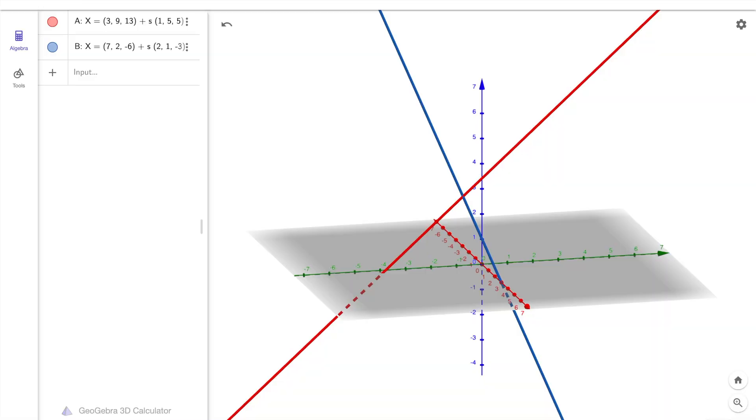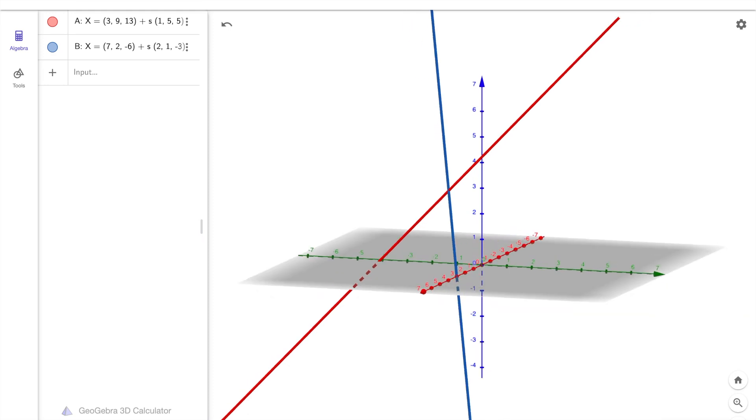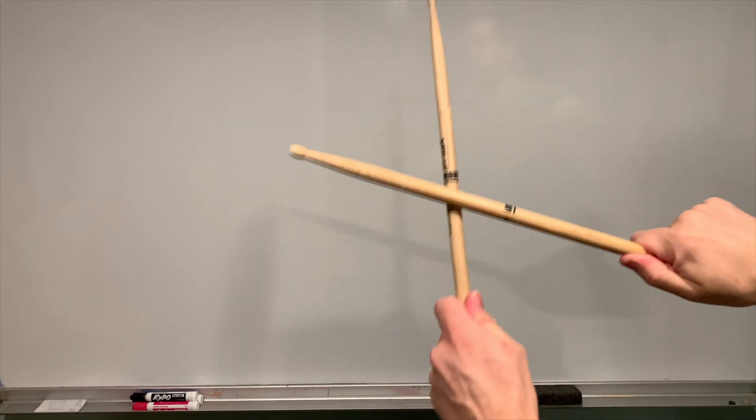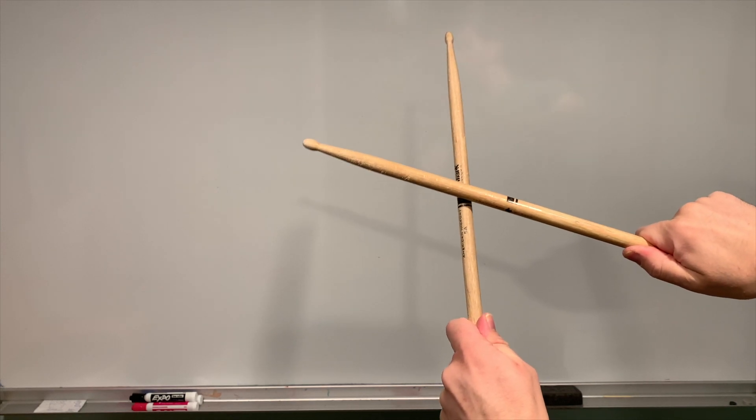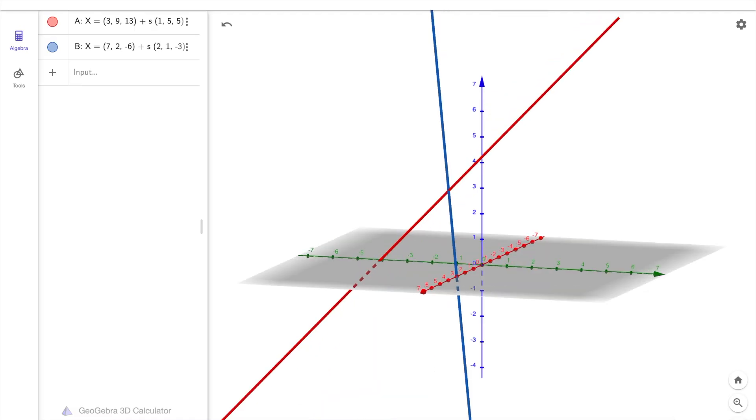It should come as no surprise that two lines in three dimensions can intersect at one point. Hold two sticks up in the air and you'll see that you can make them touch. And as I move around this three-dimensional graph,